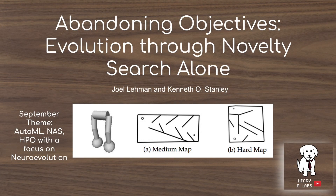Thanks for watching Henry AI Labs. This video is going to explain one of the key ideas in modern neuroevolution research: novelty search, also referred to as quality diversity algorithms. It will cover the foundational paper that introduces novelty search as an objective rather than evaluating populations in an evolutionary algorithm based only on their fitness function. This paper is in line with the September theme on Henry AI Labs on AutoML, Neural Architecture Search, and Hyperparameter optimization with a focus on neuroevolution.